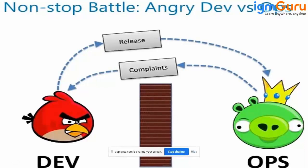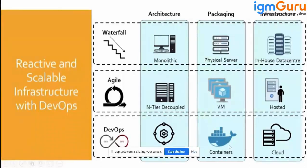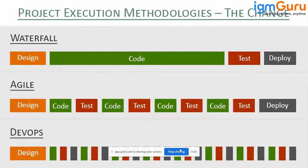If you don't do on-time delivery, the client will be unhappy and may take the project away. So the industry came up with a new process called DevOps — or DevSecOps — which brings together developers, operations, security, testing, QA, and network teams all working as one team. Now instead of monolithic architecture we talk about microservices, Docker containers, Kubernetes, and cloud platforms like AWS and GCP.